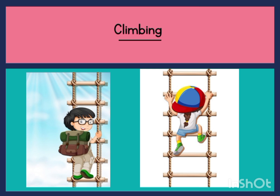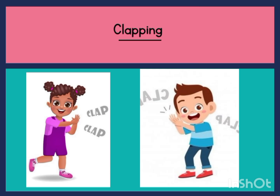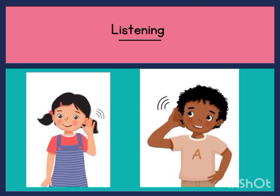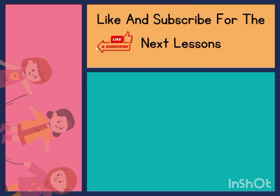Climbing — they are climbing. Climbing is also an action word. Clapping — can you hear them clapping? Clap for us to hear. Can you also clap? Clapping is an action word. Listening — they are listening here. Listening is an action word.